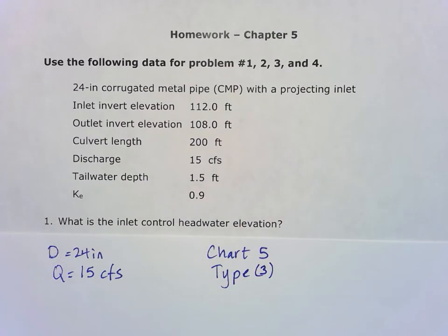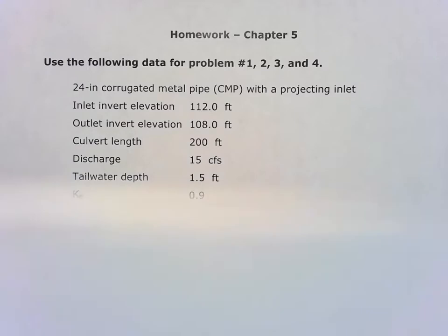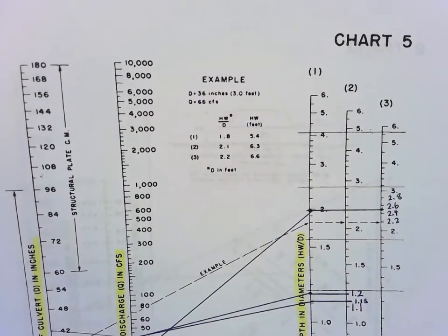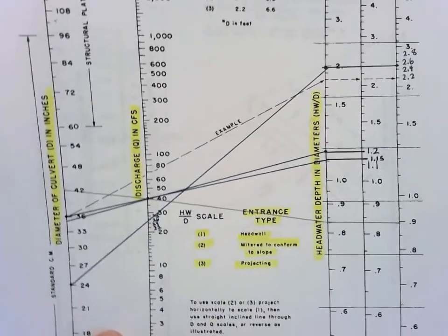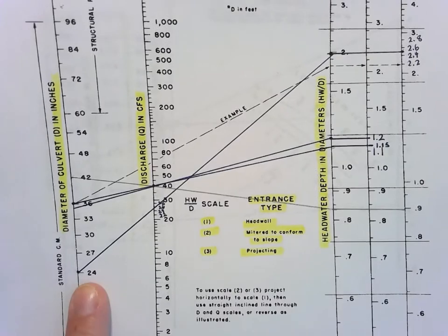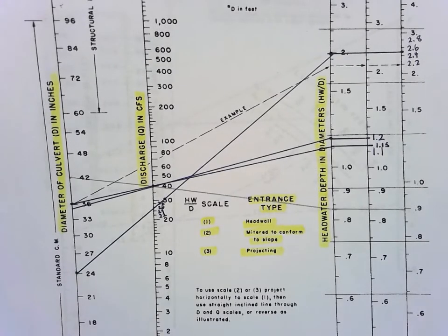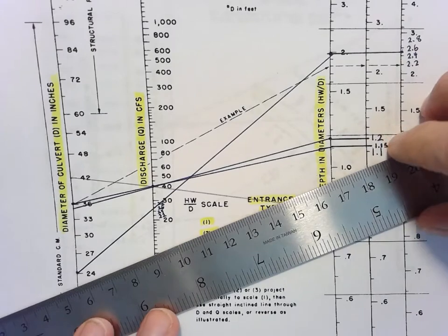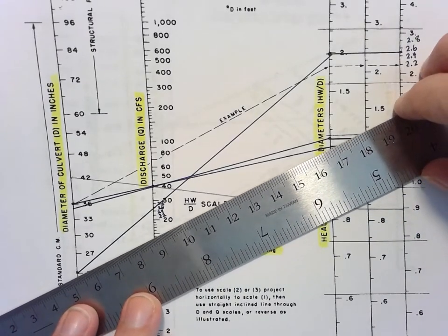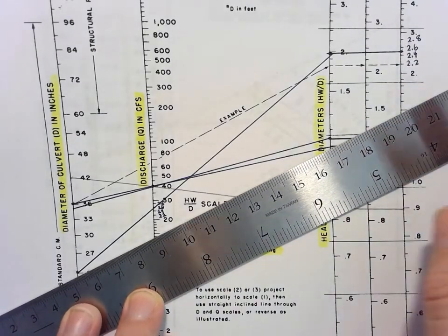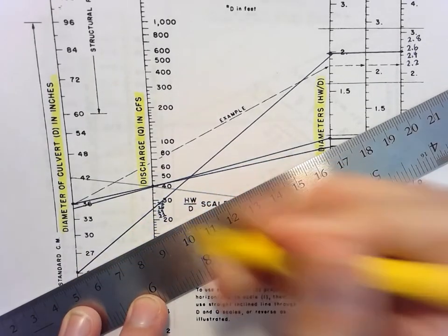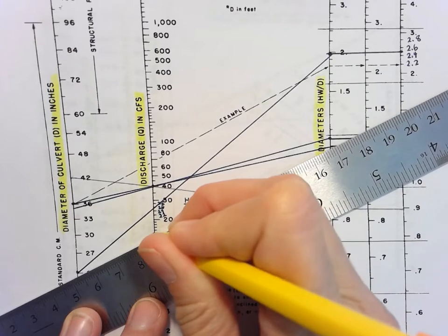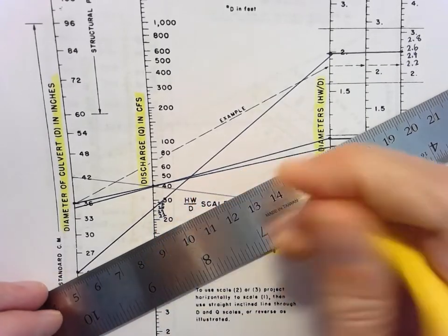That's a type three entrance. Let's look at that chart. For this case, we're on chart five with the 24-inch diameter culvert, which we'll connect to the 15 cubic feet per second line. We've got 24 inches and 15 cubic feet per second.